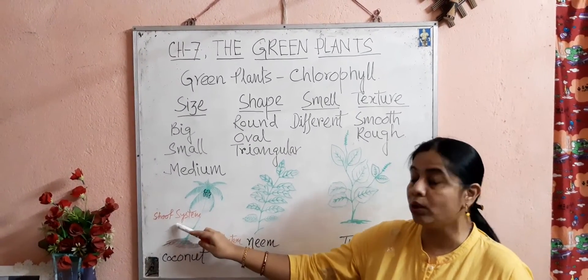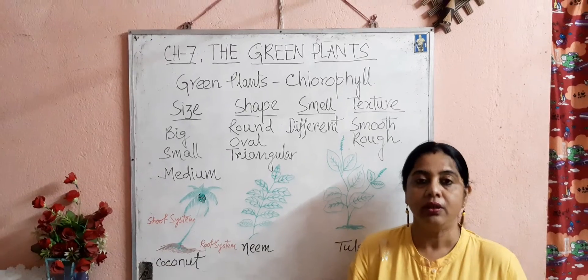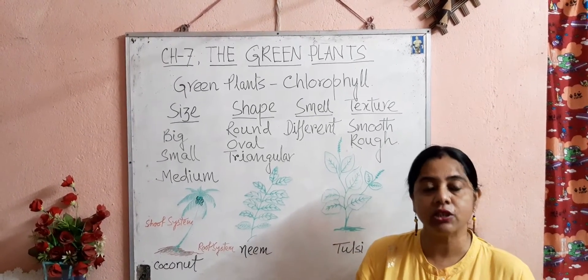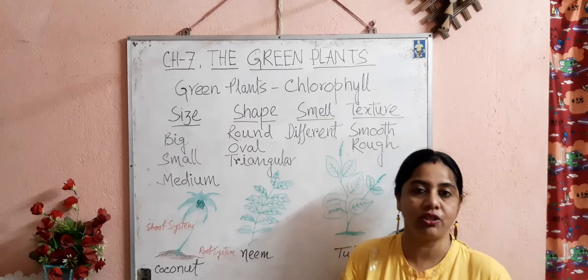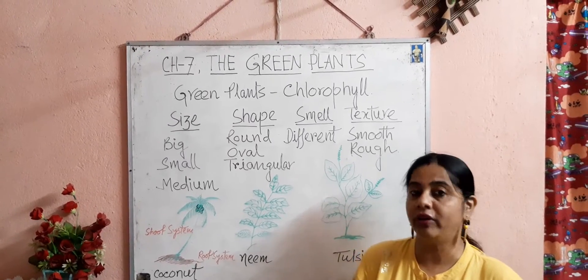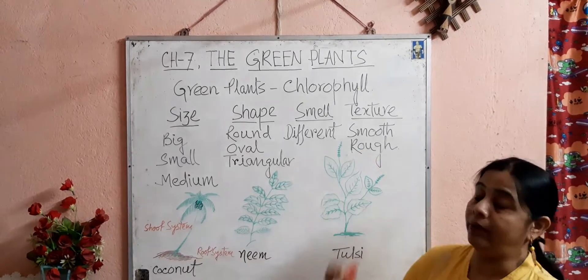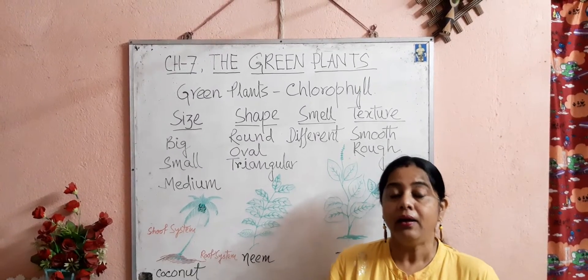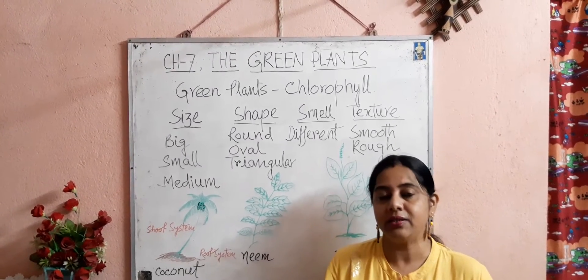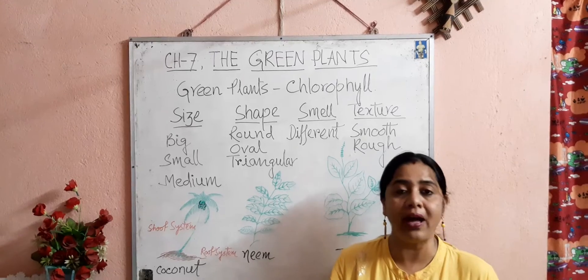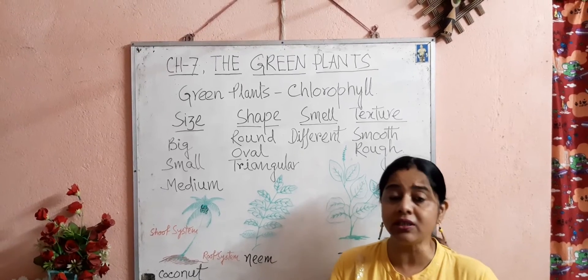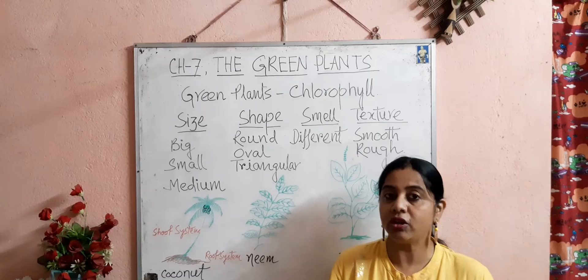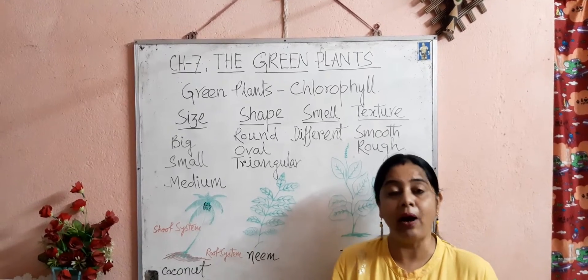This shoot system bears branches, leaves, buds, fruits, and flowers. Now students, in this chapter we will learn about the leaves of the plants. Leaves are one of the most important parts of the shoot system. Let us study about these leaves.